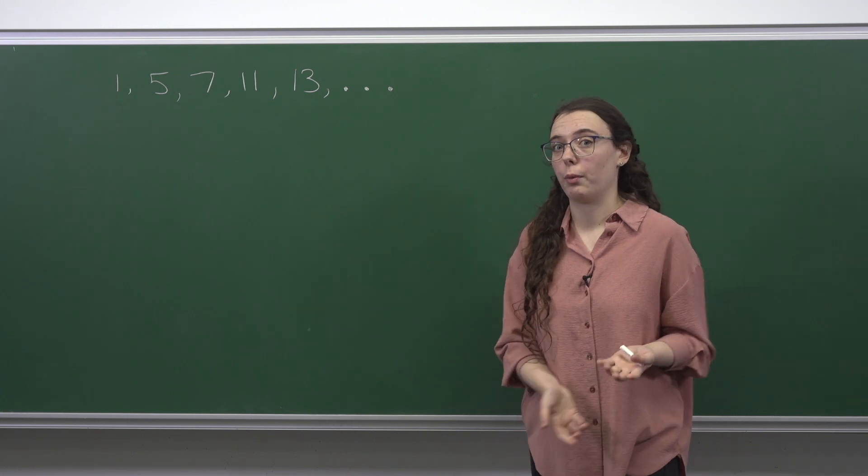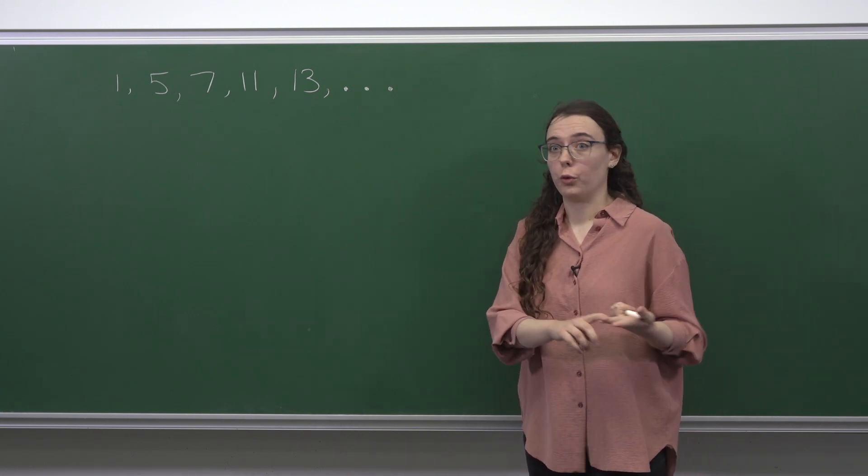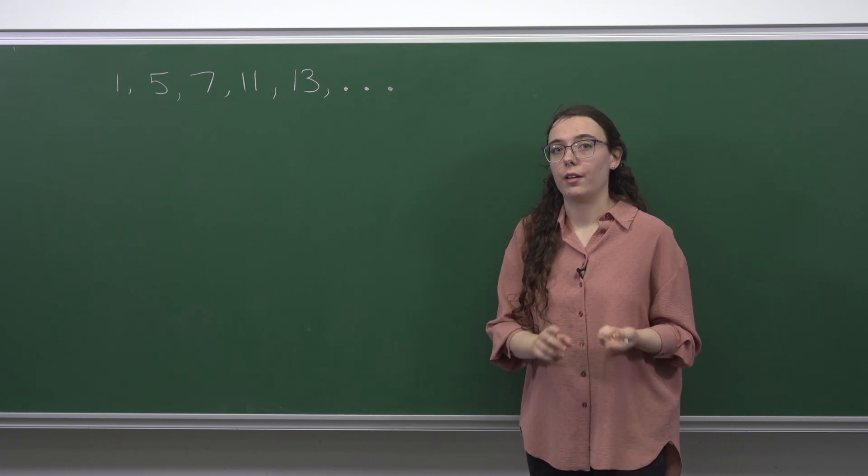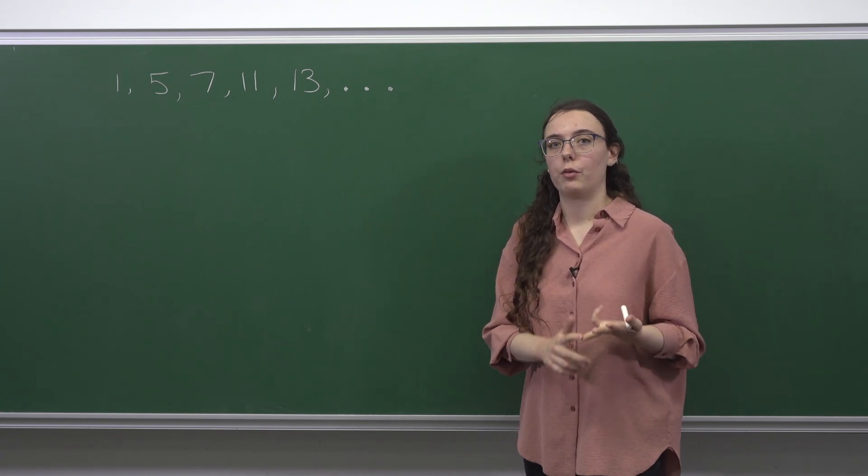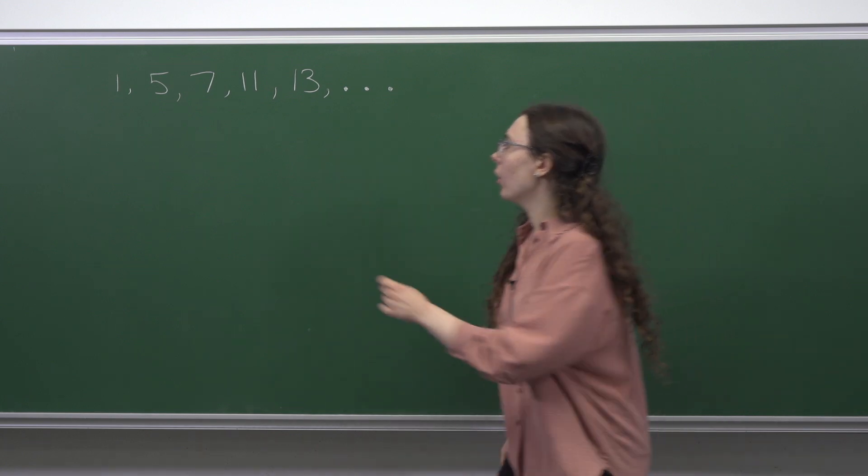Well, it definitely can't be zero or two or four because that would make you even, and it definitely can't be three because that would make you a multiple of three. And so this means that all numbers in this sequence are of the form